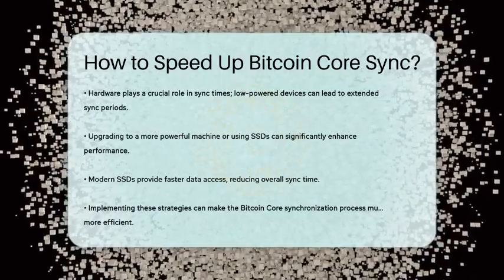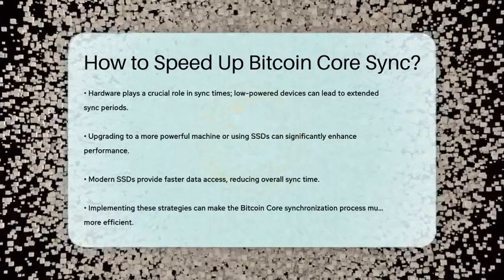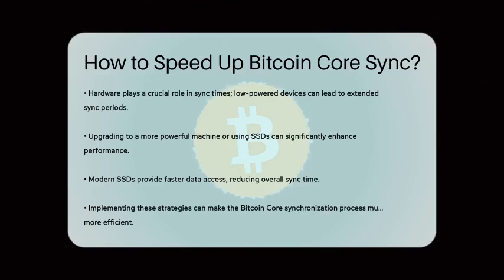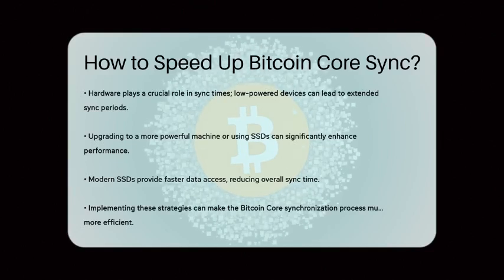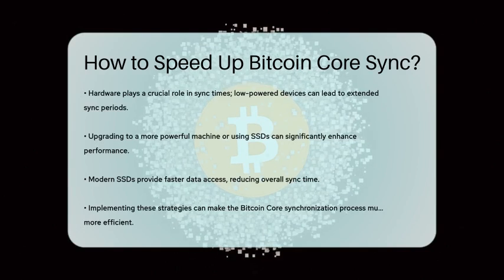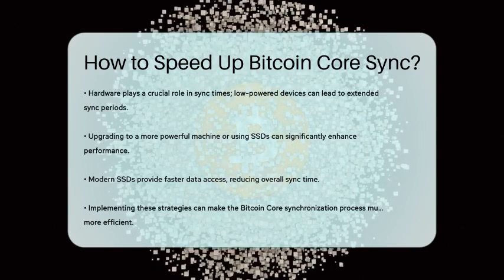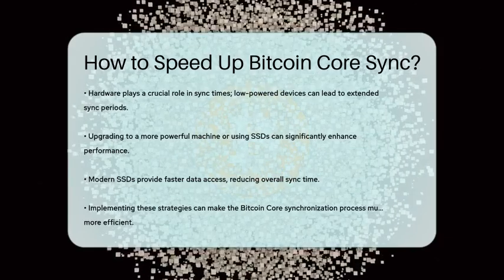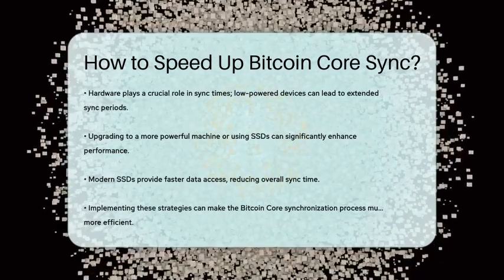By adjusting the dbcache setting, using UTXO snapshots, optimizing your network connections, and ensuring you have adequate hardware, you can significantly speed up the synchronization of your Bitcoin Core node. These methods can turn what would otherwise be a days-long process into something much more manageable.